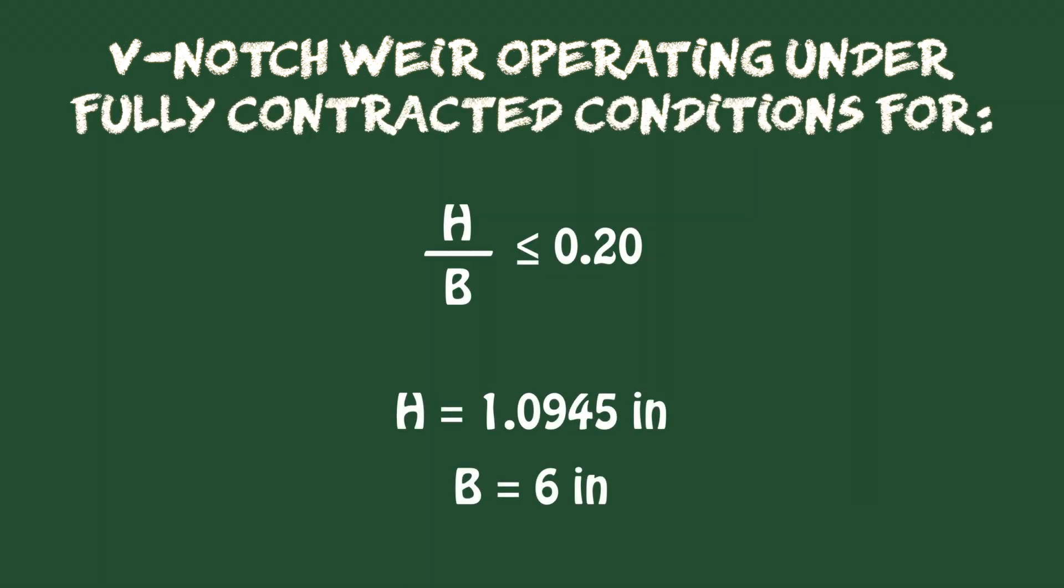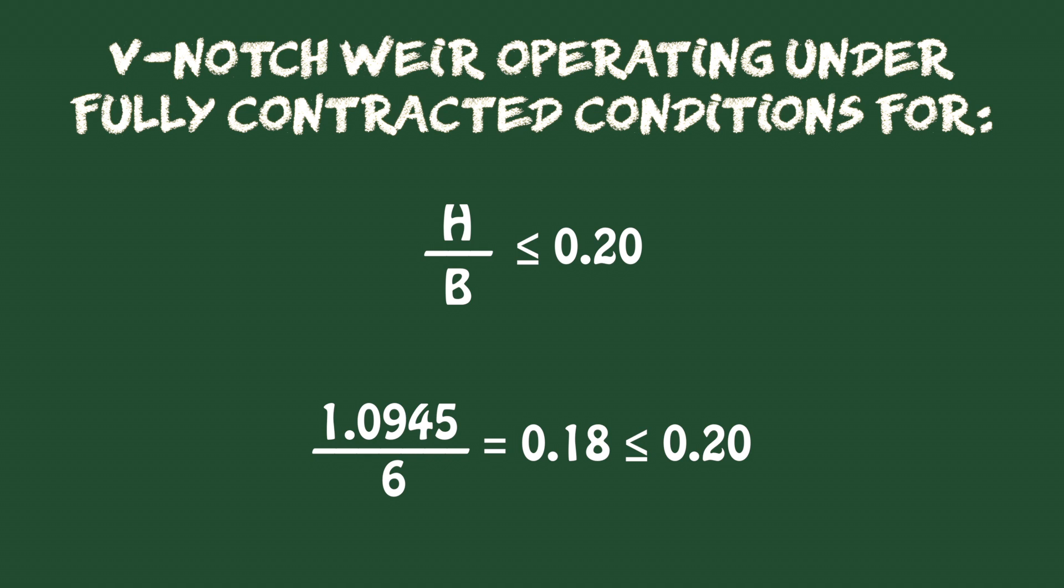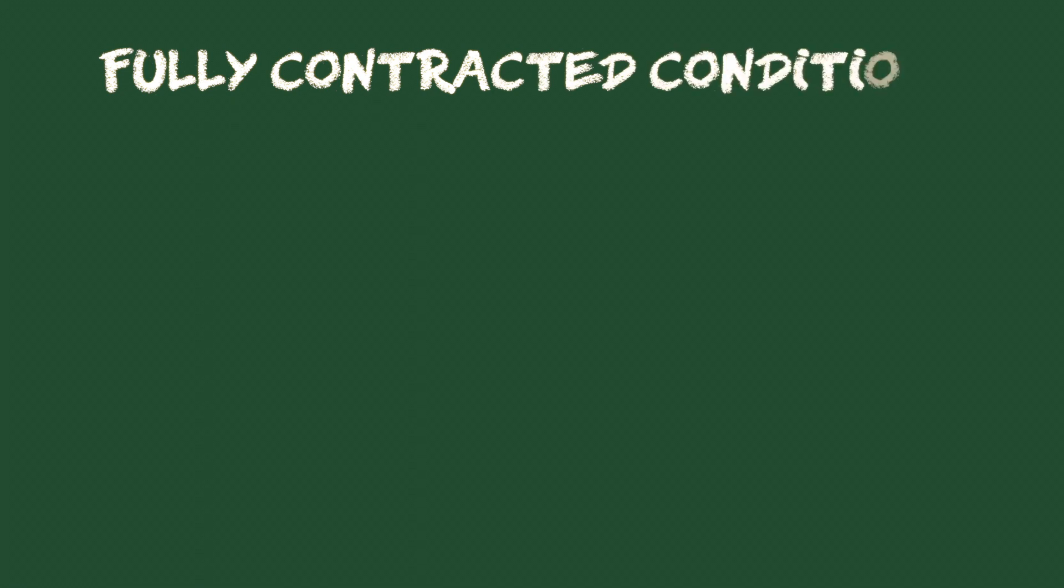The ratio of head to width H over V is equal to 1.0945 over 6 equal 0.18, which is less than 0.2. Therefore, the weir is operating under fully contracted conditions.